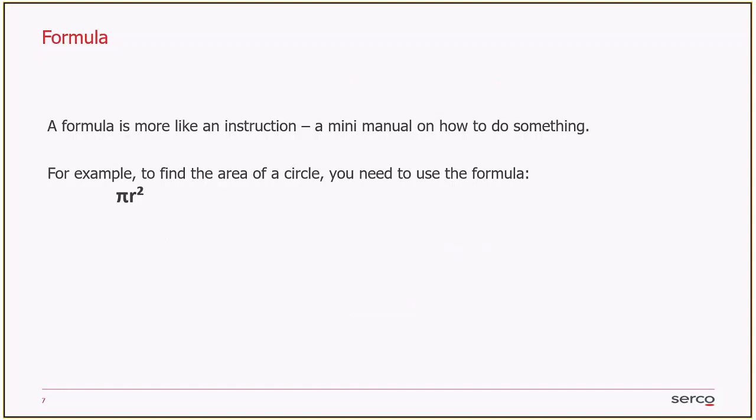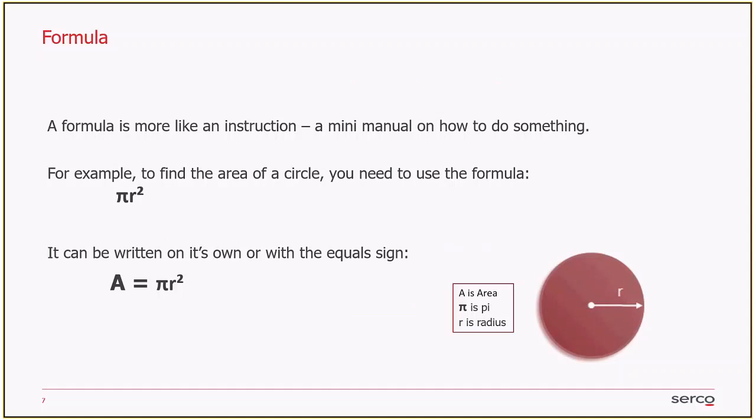One thing I'm going to look at is a formula that you can use to find the area of a circle. Very common in functional skills. The formula is pi r squared. That's how you find the area of any circle. It can be written with the equal sign, so area equals pi r squared. And in the test it will tell you what A stands for. It will say A is area, pi symbol is pi, and r is the radius of a circle.